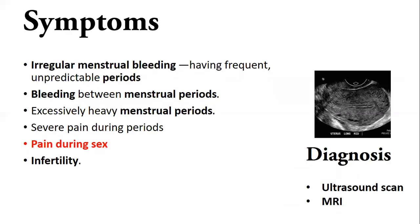So there are symptoms when there are endometrium problems. The first symptom is irregular periods. When there are irregular periods, you need to see a doctor. Bleeding between menstrual periods is another symptom — for example, if your period date is January 10th and you are on a 28-day cycle, your next period should be around February 7th or 8th. It is better to go and see a good gynecologist.